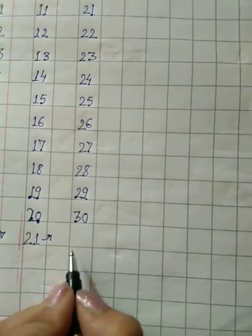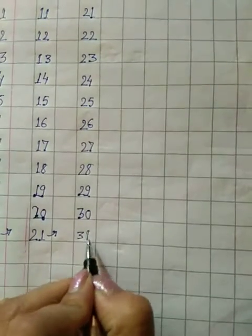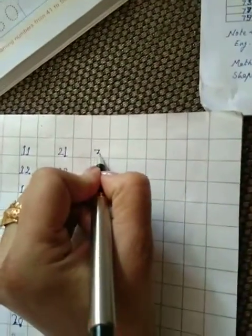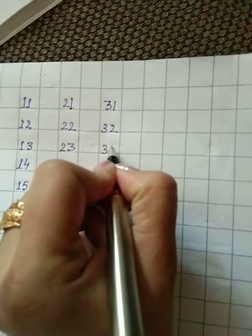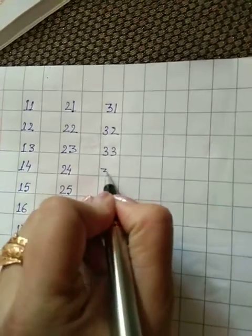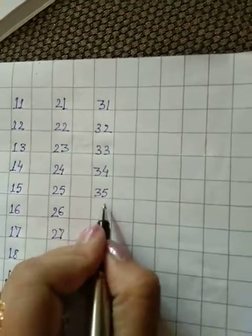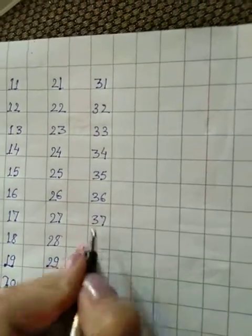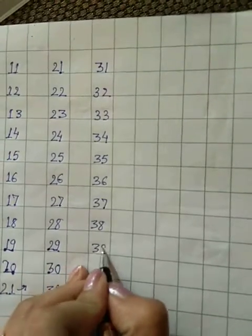30 ke baad kya aayega? Jaise ki 20 ke baad 21 aaya. Waise hi 3, 0 ke baad 31 aayega. Ab hum isko kya karenge? Upar ki taraf. Yahaan par likhenge 3, 1, 31. 3, 2, 32. 3, 3, 33. 3, 4, 34. 3, 5, 35. 3, 6, 36. 3, 7, 37. 3, 8, 38. 3, 9, 39.